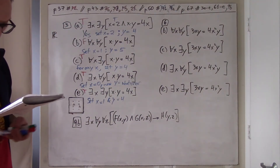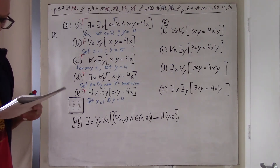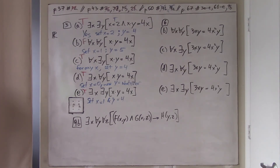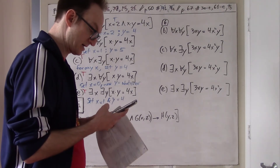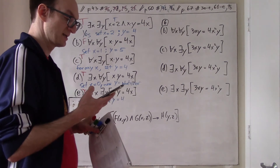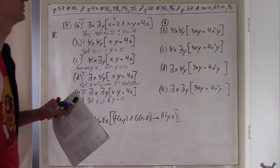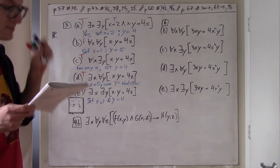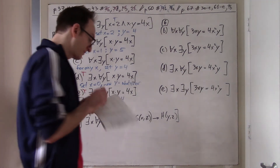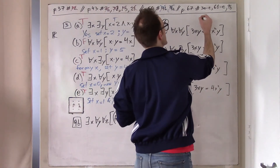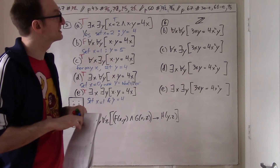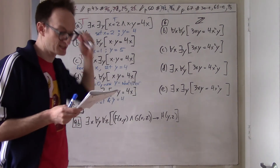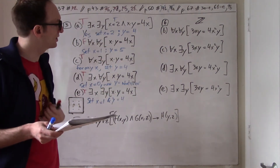Now problem 6B: let the universe of discourse be the set of integers. It's the exact same sentence structure, but the domain is now integers, and that changes things. Is it true that for all X and for all Y, 3XY = 4X? You can cancel XY from both sides, reducing this to 3 = 4X, which can't always be true for integers. Set X = 1, Y = 1: left-hand side is 3, right-hand side is 4. That's false.